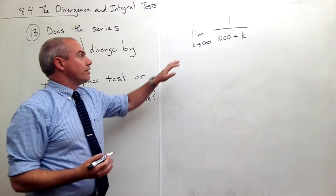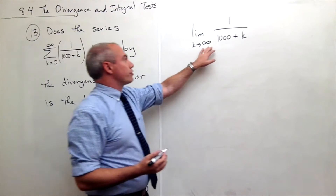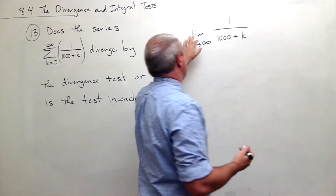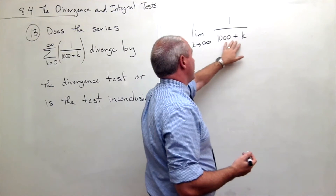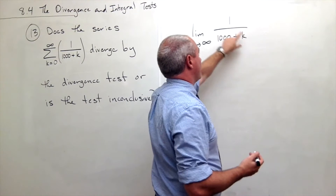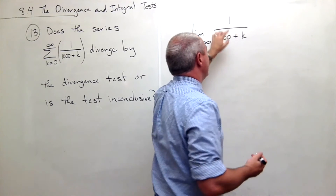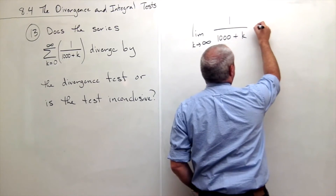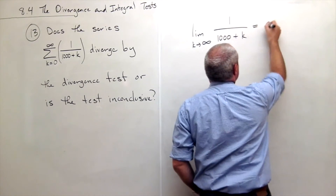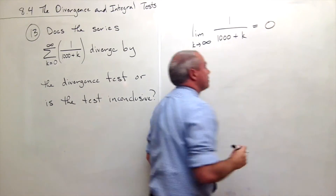Now this is pretty trivial. The limit as k goes to infinity: the bottom gets huge, 1 over something huge is very small, so I get 0.